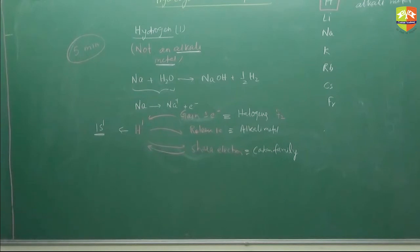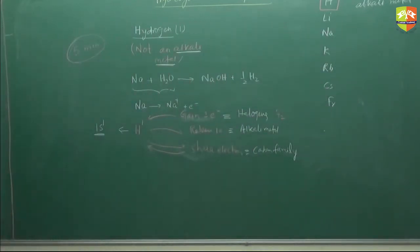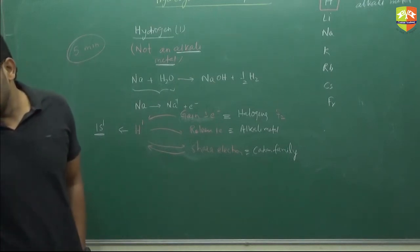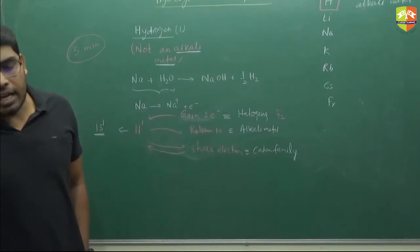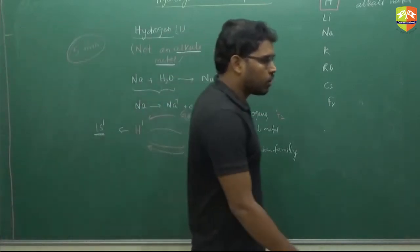The first method is: by the action of water on active metals — by the action of water on alkali metals. You can also take alkaline earth metals. The elements of group 1 and group 2 react with water and evolve hydrogen gas.